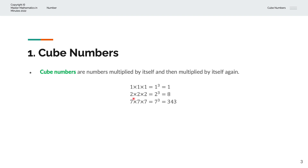Secondly, we have the number 2. We'll multiply by itself, which is 2, and then multiply by itself again, which is 2. So the notation for that is 2 to the power of 3, or 2 cubed, and that gives us 8.